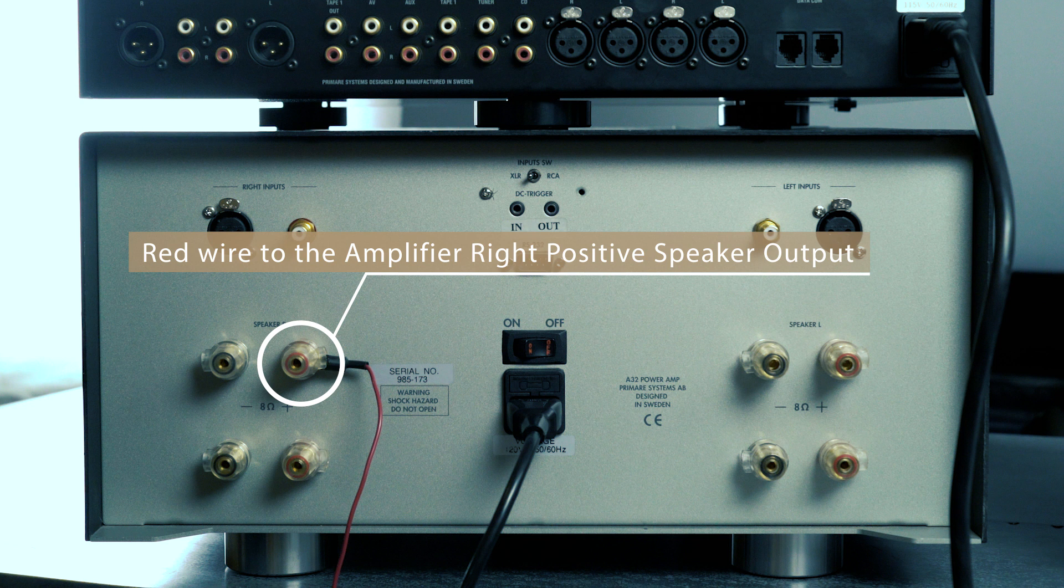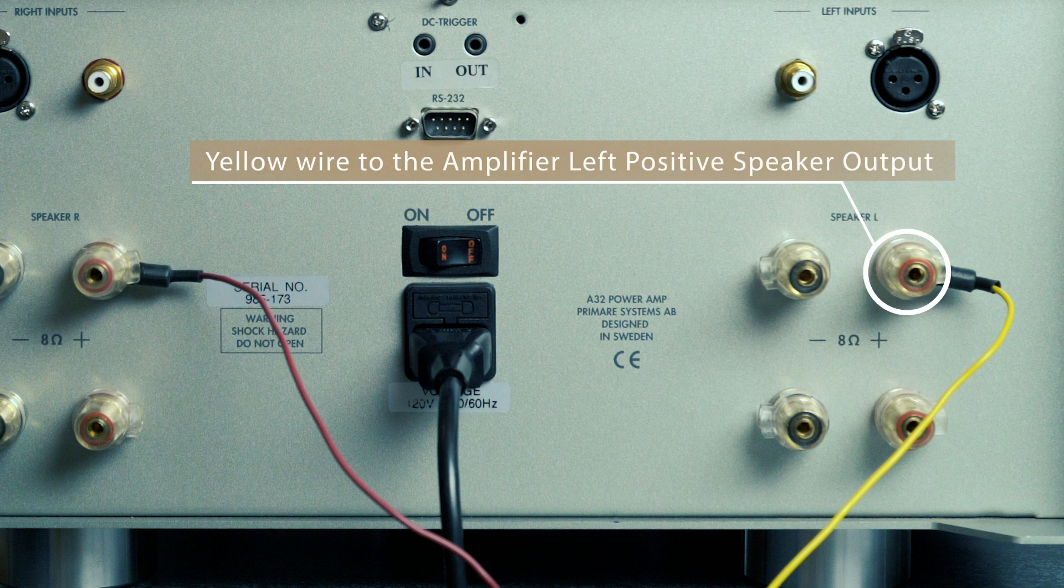With your amplifier off, first connect the red wire to the amplifier's right positive speaker output terminal. Then attach the yellow wire to the amplifier's left positive speaker output terminal.